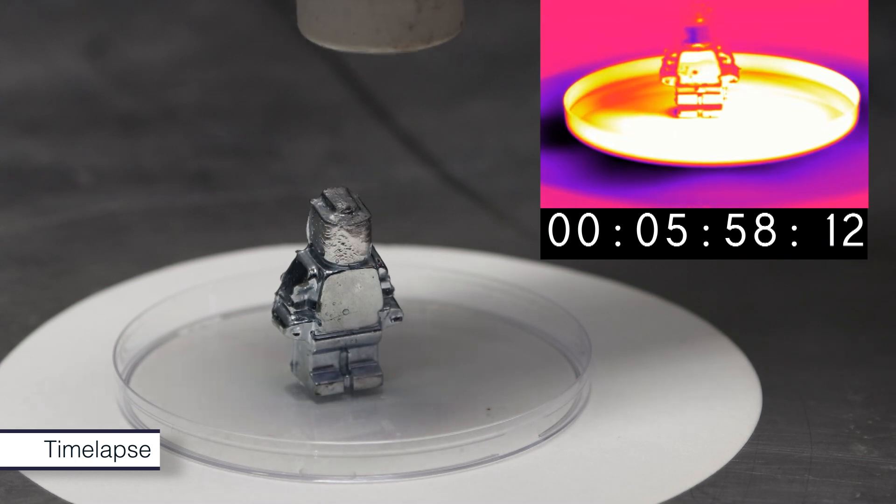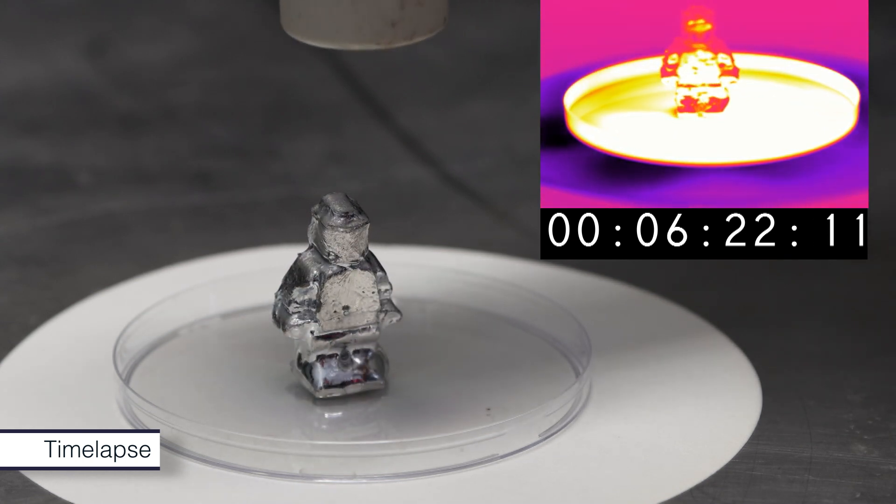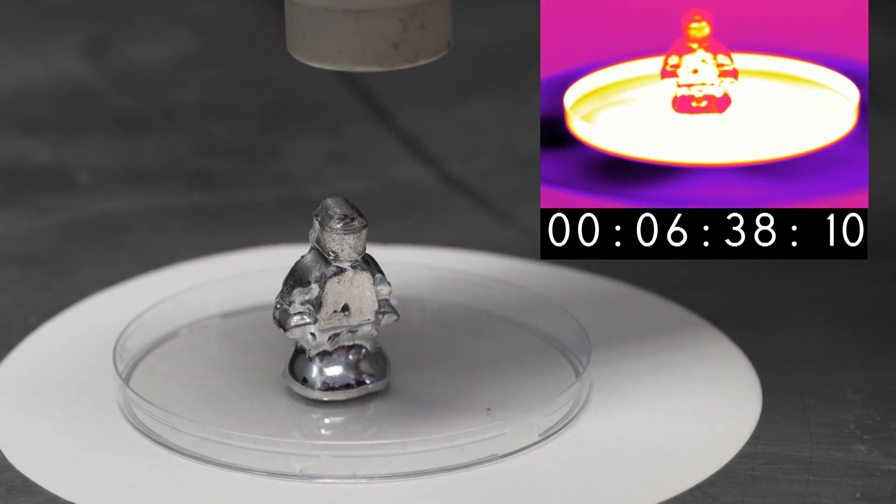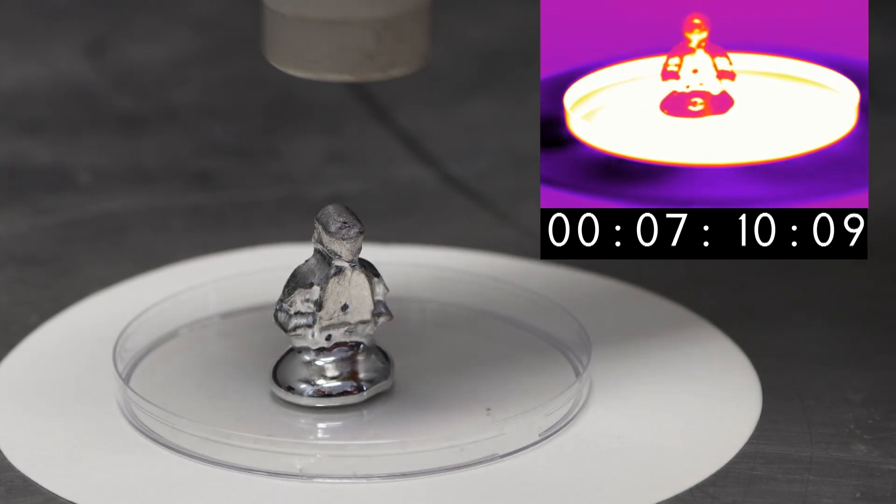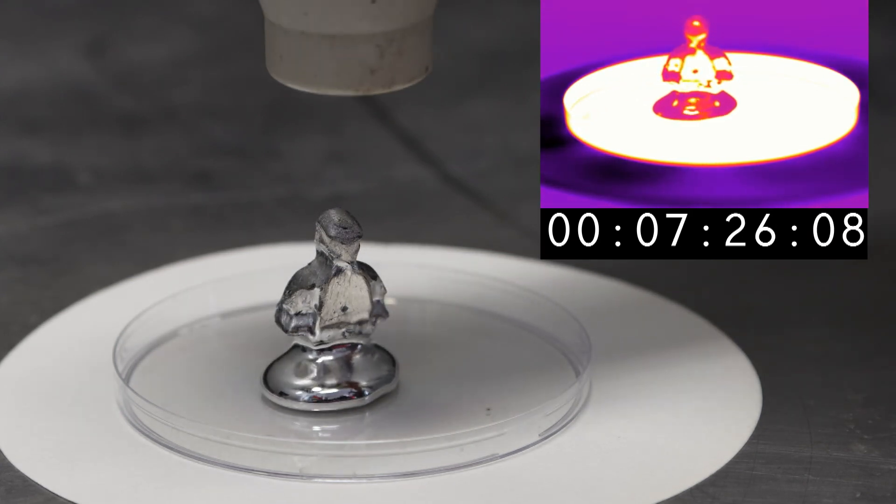So obviously, once liquid metal is formed, it will all pool at the bottom, and perhaps that improves the conductivity, because the heat is blowing down from the top.